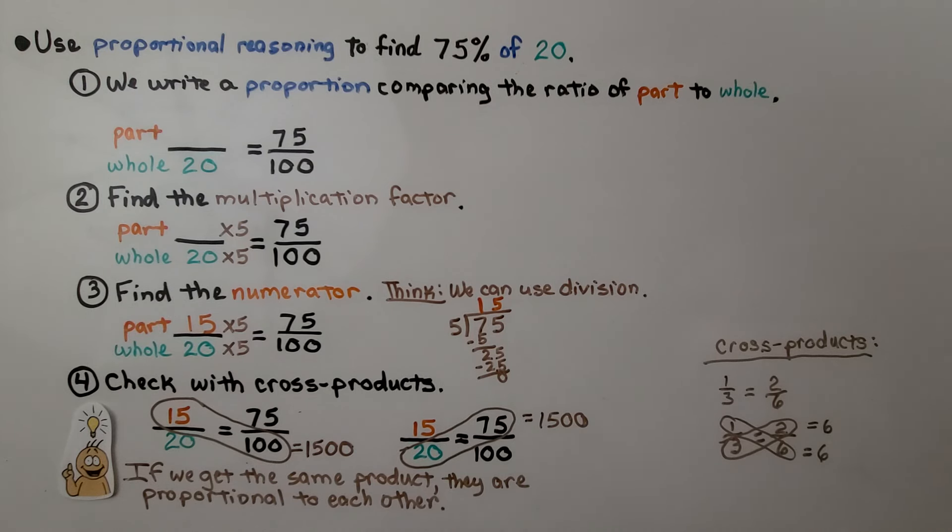Now, we can also check this with cross products. If you have these two ratios in proportion to each other, you should be able to multiply the numerator of the first one to the denominator. We're going to get 1500. Then we can multiply the denominator of the first one to the numerator of the other one, and we should get 1500. If we get the same product, they're in proportion to each other.